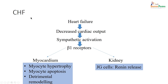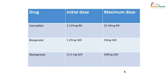Beta blockers are contraindicated in bronchial asthma — this is still the case. They are also contraindicated in congestive heart failure, but now vasodilatory beta blockers are commonly used in CHF. In heart failure, there is decreased cardiac output and increased sympathetic activation that activates beta-1 receptors. When you give beta-1 blockers, you block the stimulatory action on the myocardium, inhibiting myocardial hypertrophy and the remodeling process. Beta blockers in the kidney also inhibit renin release. Drugs preferred in CHF: carvedilol, bisoprolol, and metoprolol — starting dose 3.125 mg twice a day, increased up to 25–50 mg; bisoprolol 1.25 mg, increased up to 10 mg; metoprolol 12.5–200 mg.